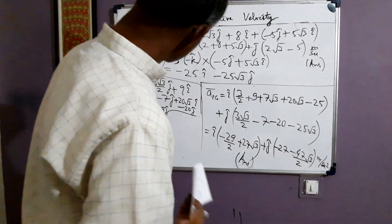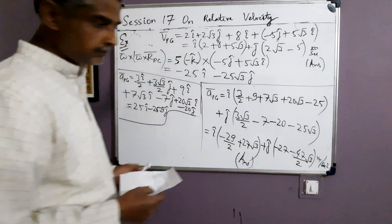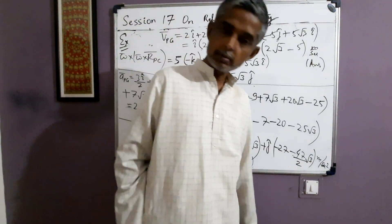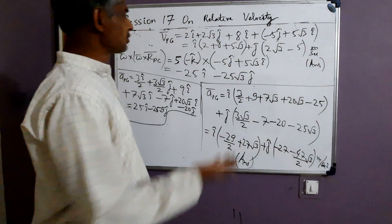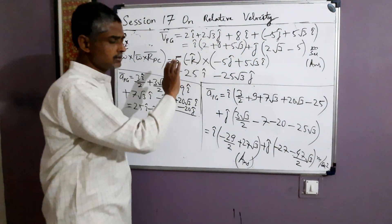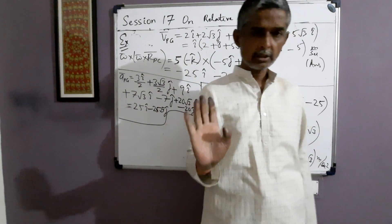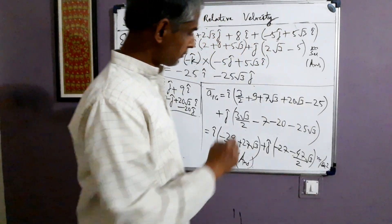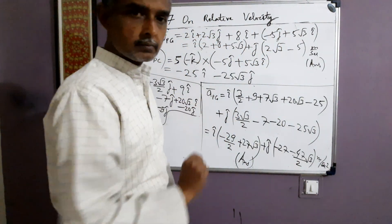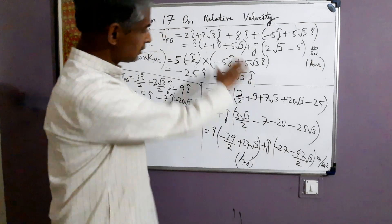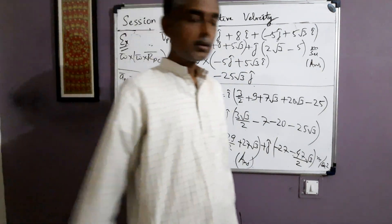So we have obtained both VPG and APG. The main thing is to know the rotating frame formulas — that's all. Once you know the formulas and attempt a few numerals of this type, this portion of relative velocity will be fully cleared.